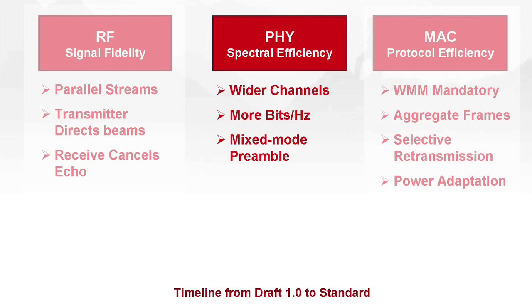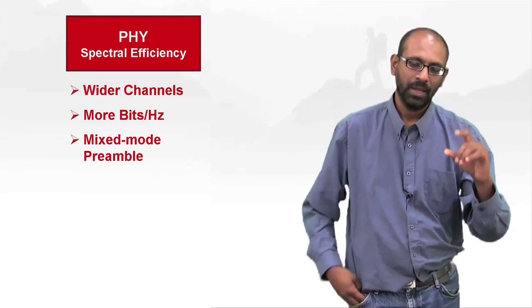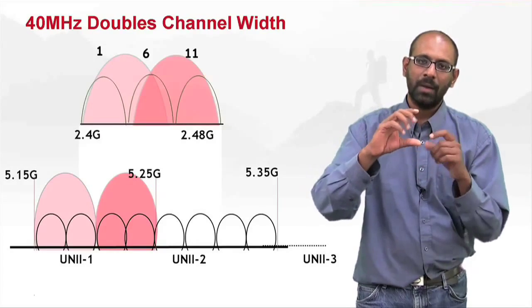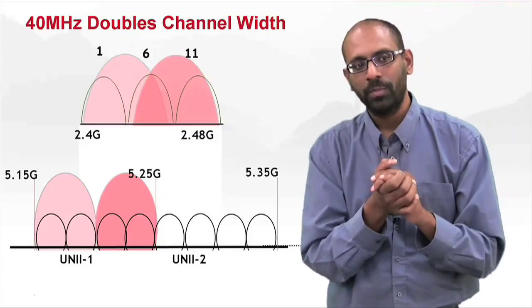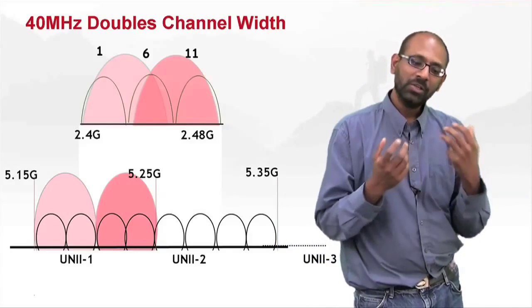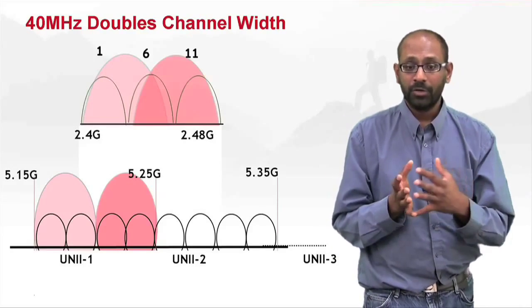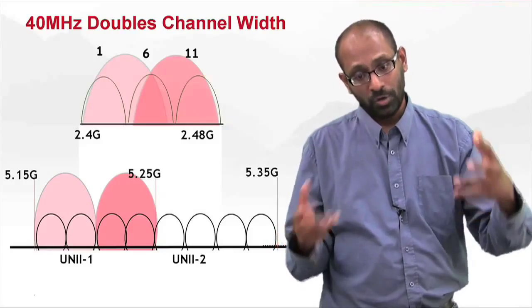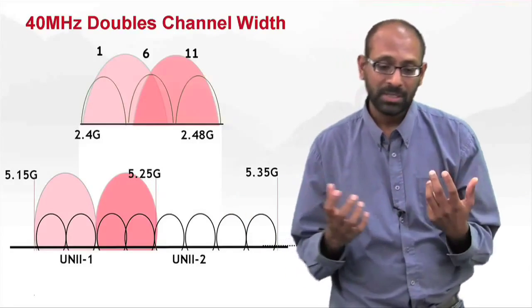With 802.11abg, you had approximately 20 MHz for every channel. This is the spectrum width — the RF bandwidth that could be used to pump bits through the channel. Think of it in terms of traffic lanes: if you double the number of lanes, you're going to be able to speed up the traffic. The same concept applies.